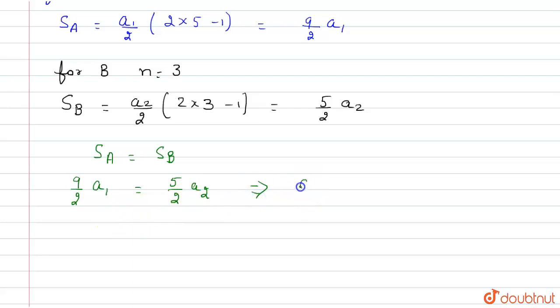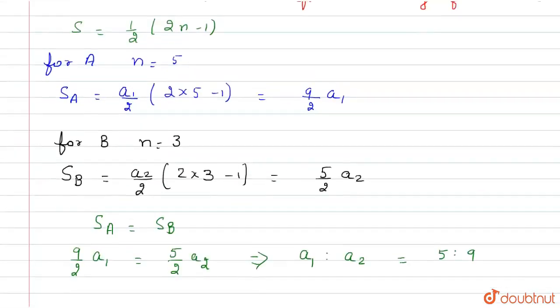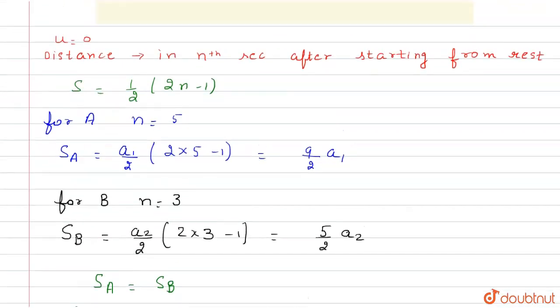a₁:a₂ = 5:9. So the ratio is 5:9. I hope you understand the explanation.